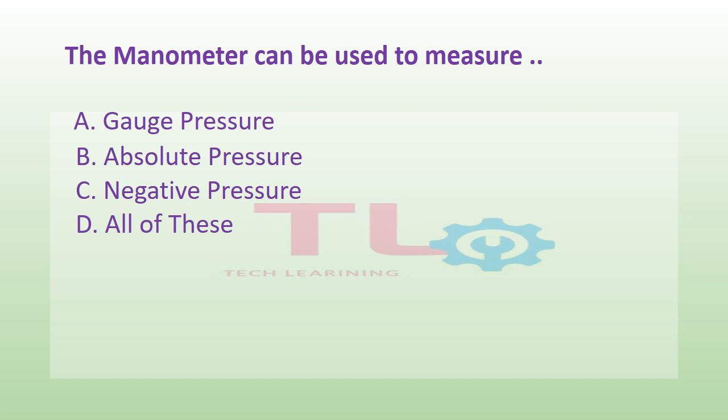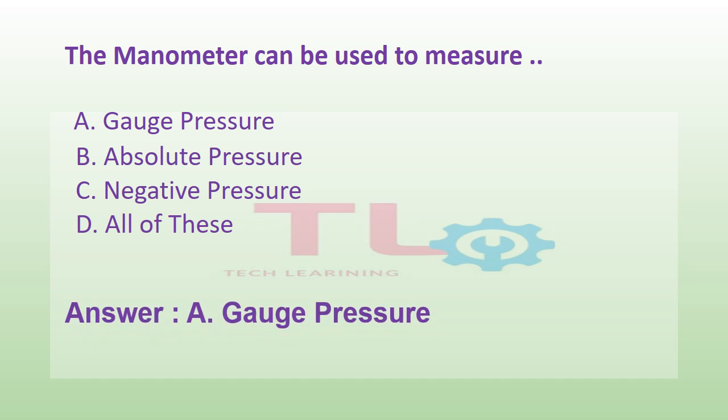The manometer can be used to measure: Option A: gauge pressure. Option B: absolute pressure. Option C: negative pressure. Or option D: all of these. And the answer is option A, gauge pressure.